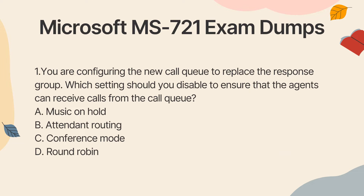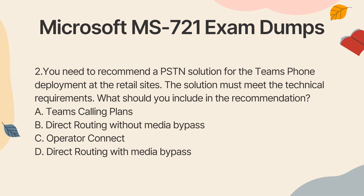Question 1. You are configuring a new call queue to replace a response group. Which setting should you disable to ensure that the agents can receive calls from the call queue? A. Music on hold. B. Attendant routing. C. Conference mode. D. Round robin.